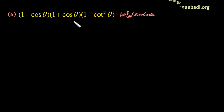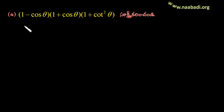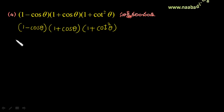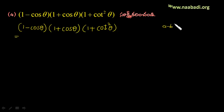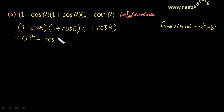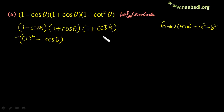1 minus cos theta, into 1 plus cos theta, into 1 plus cos squared theta. This equals a minus b into a plus b, which gives 1 minus cos squared theta, into 1 plus cos squared theta.